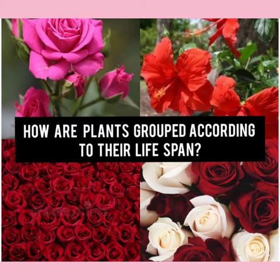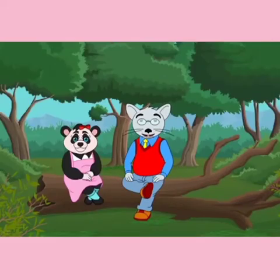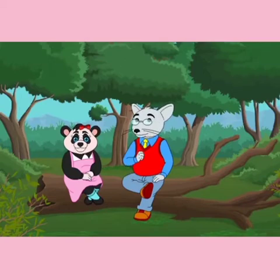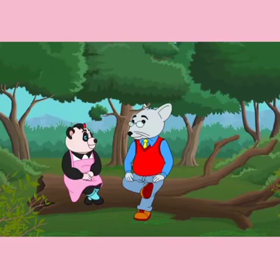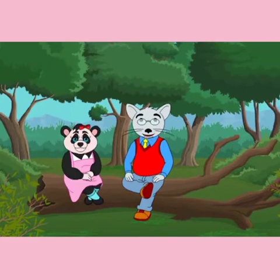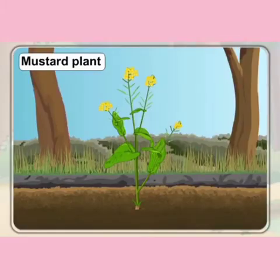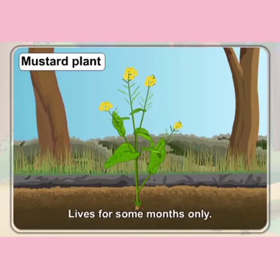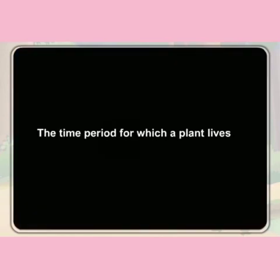What is the meaning of lifespan? All living things do not live forever — they live for a certain time and then they die. For example, a mustard plant lives for some months only, after which it dies. The time period for which a plant lives is called its lifespan.